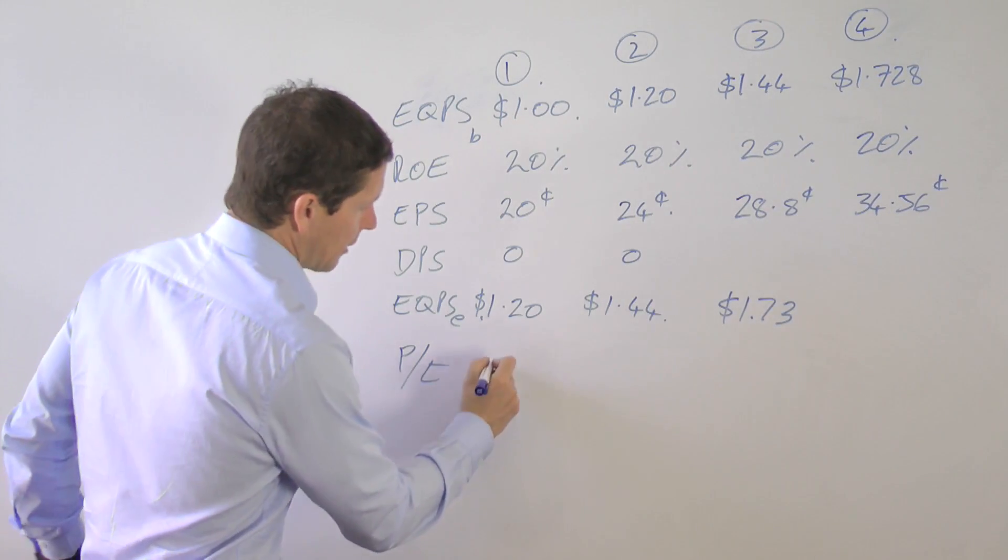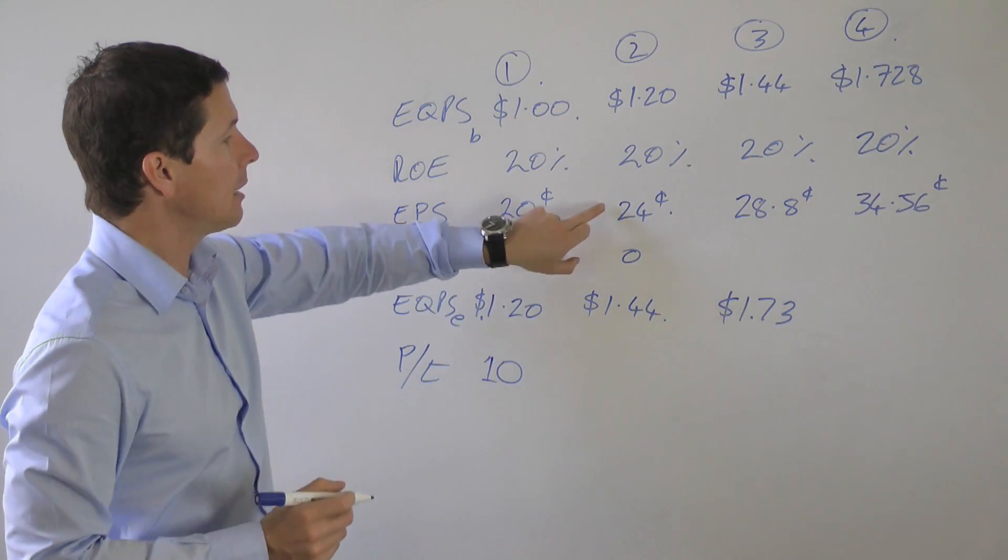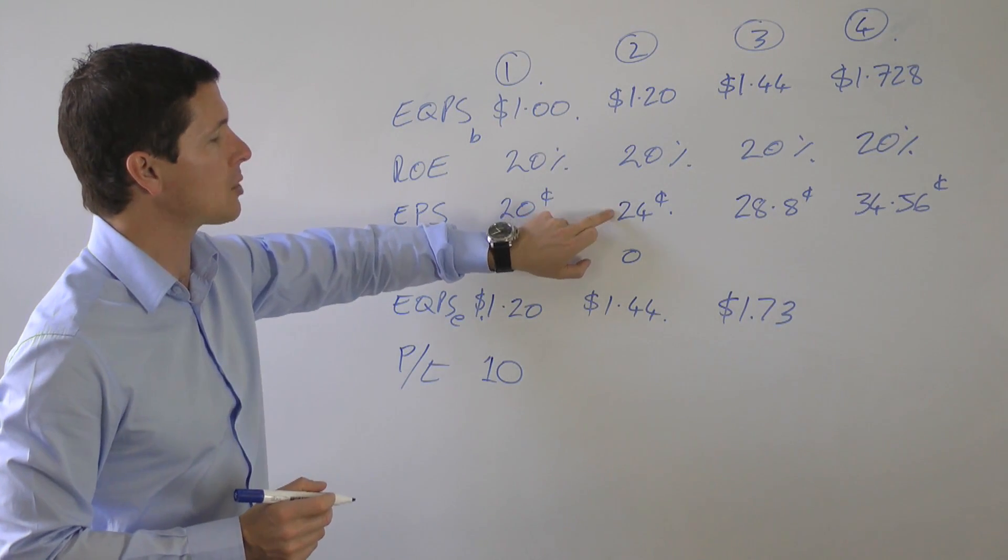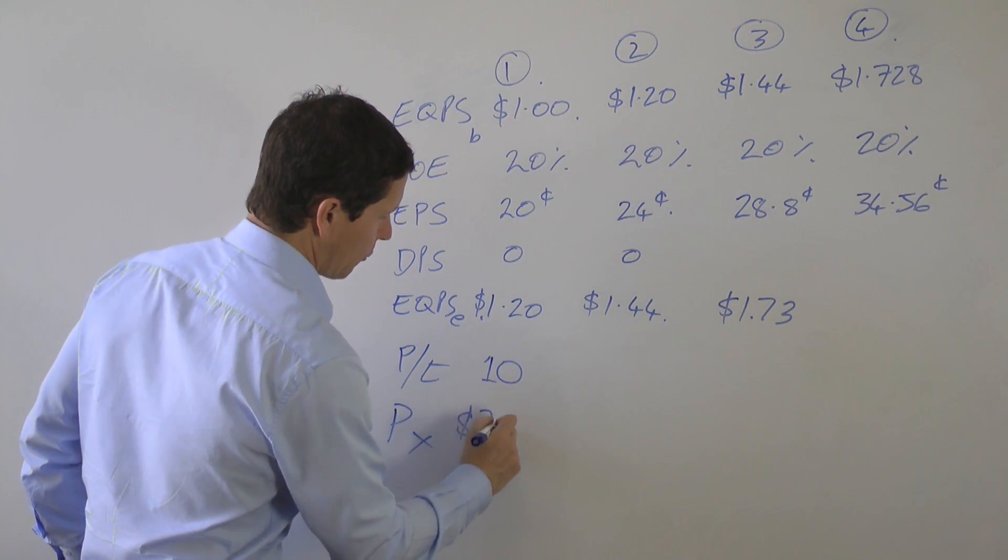So let's assume that we buy the shares on a forward PE of 10. The forward earnings is 24 cents, so we buy the shares at a price of $2.40.